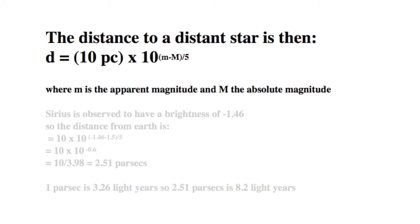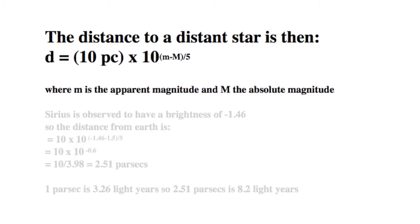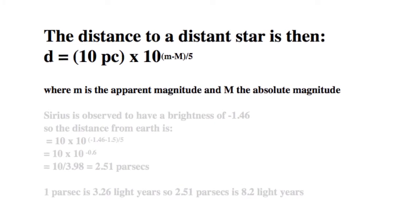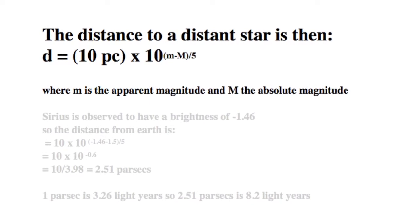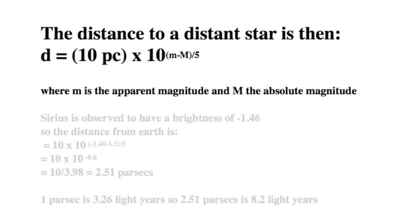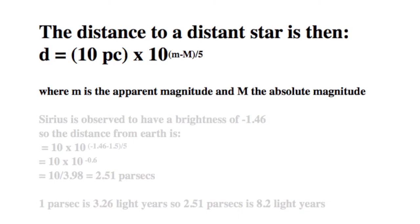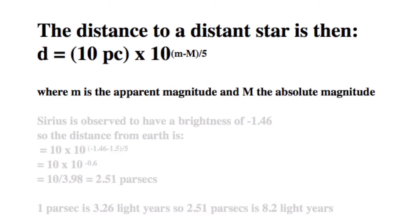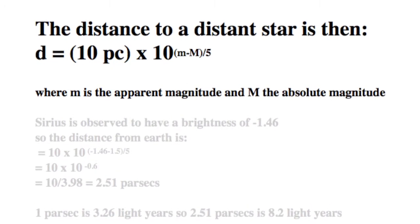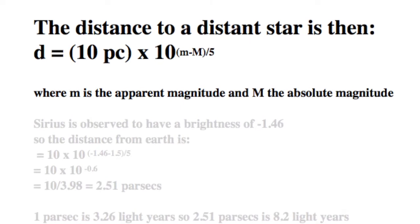Without going through all the intervening algebra, then, the distance to a star is 10 parsecs multiplied by 10 to the power m minus M divided by 5, where m is the apparent magnitude and M is the absolute magnitude.